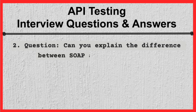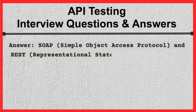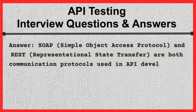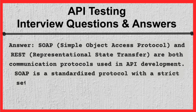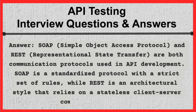Question 2. Can you explain the difference between SOAP and RESTful APIs? Answer. SOAP, Simple Object Access Protocol, and REST, Representational State Transfer, are both communication protocols used in API development. SOAP is a standardized protocol with a strict set of rules, while REST is an architectural style that relies on a stateless client-server communication model.